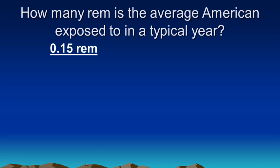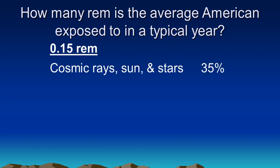Where does this radiation come from? A very large part of it is from the sun, and stars, and outer space, cosmic rays. In fact, we can say over a third of our typical radiation exposure comes from the sky, essentially. 35%.